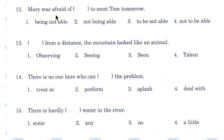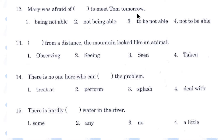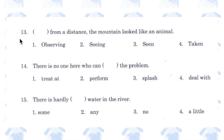Number 12. 'Mary was afraid of being not able / not being able / to be not able / not to be able to meet Tom tomorrow.' Number 2. 'Afraid of not being able to meet Tom tomorrow.' The word 'of' is a preposition, and prepositions must be followed by a noun or a gerund, so we can eliminate number 3 and number 4. Between 1 and 2, the negation 'not' usually comes before the gerund.